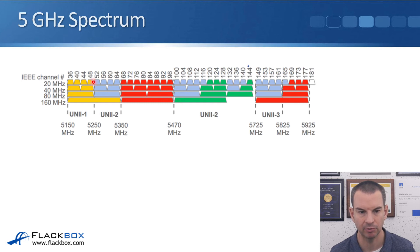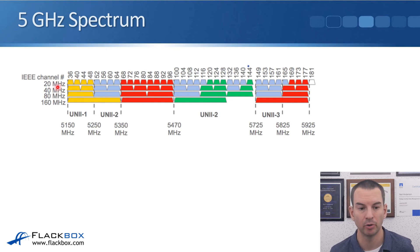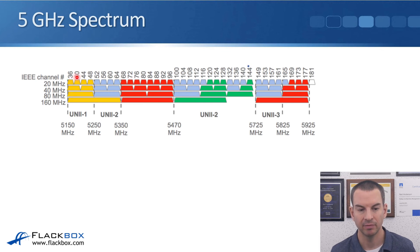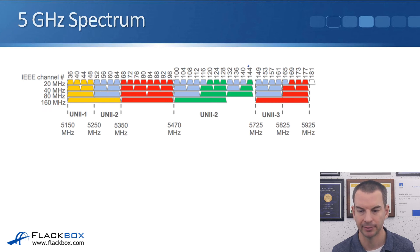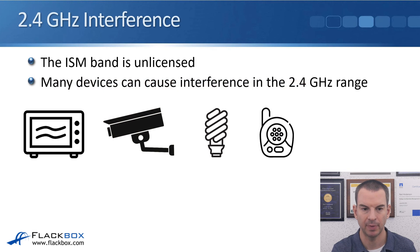Looking at the 5 GHz spectrum diagram, you can see all the different channels at the top. Using single channels without bonding at 20 MHz, we have channels 36, 40, 44, and so on. We could bond channels 36 and 40 together to double it to 40 MHz for more throughput. We could double again to 80 MHz covering channels 36 to 48, or go all the way up to 160 MHz covering channels 36 and beyond.